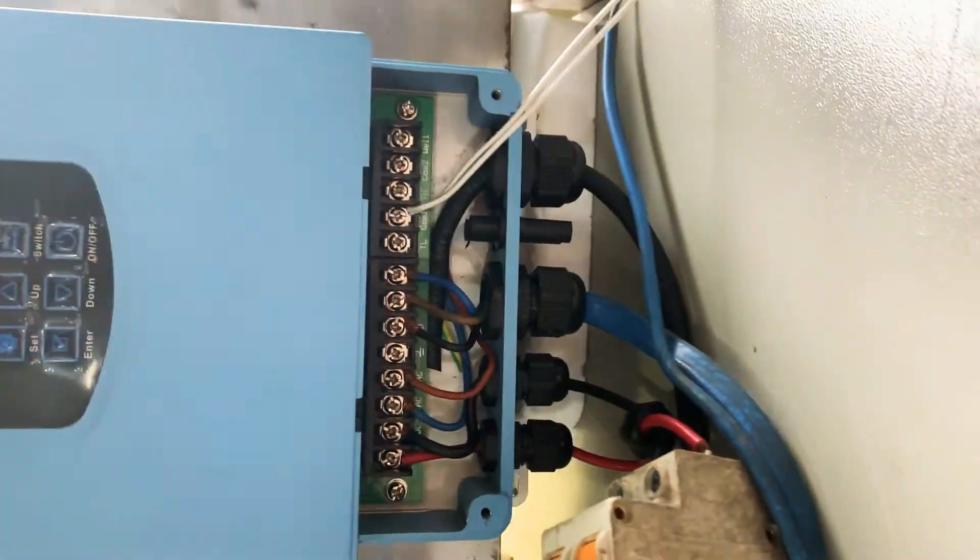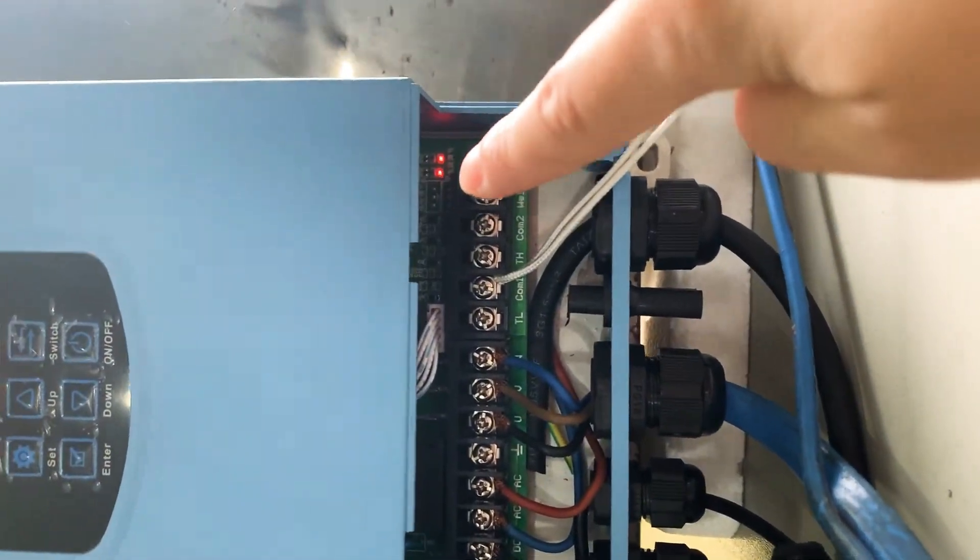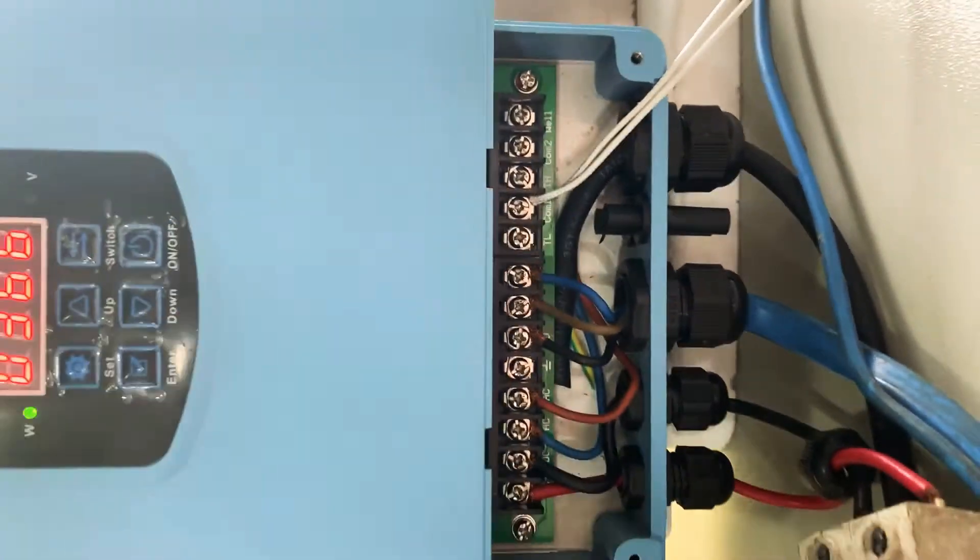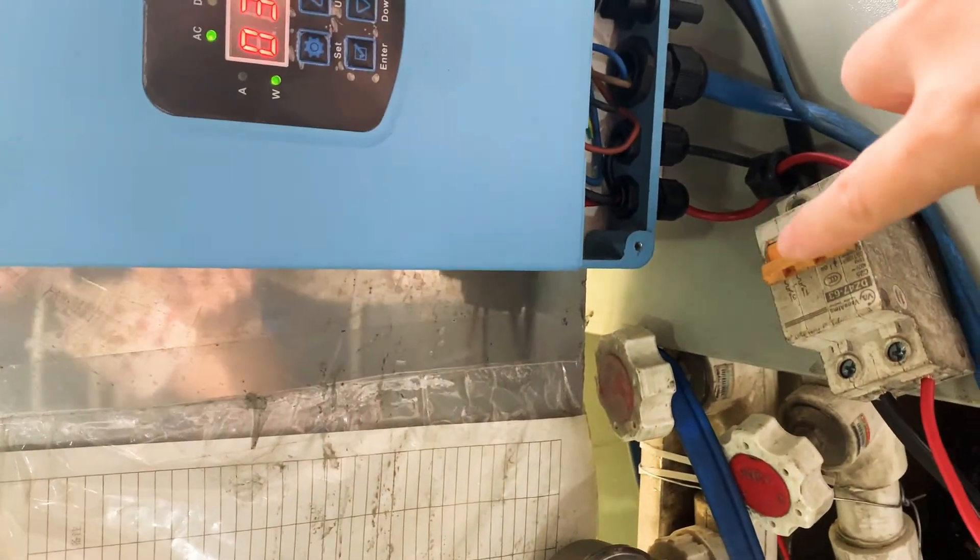From here you can see two red lights, both AC and DC power inside. Here is our DC power.